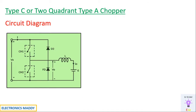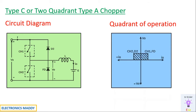This is the circuit diagram of type C chopper. It is also referred to as two quadrant type A chopper. It operates in first and second quadrant. If you carefully observe the circuit diagram, it is basically a combination of type A chopper and type B chopper connected in parallel.